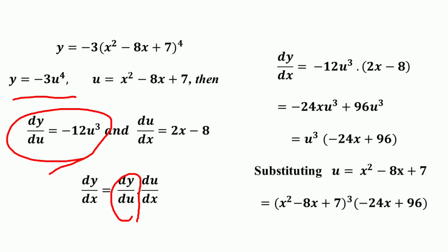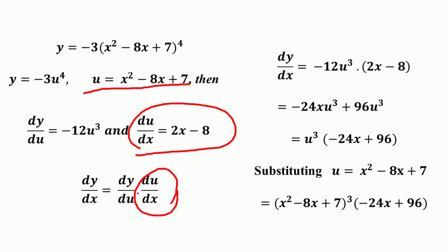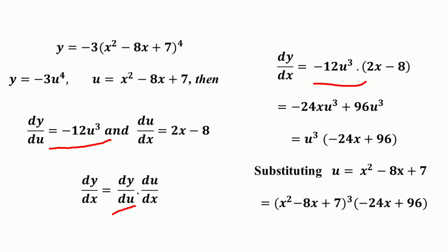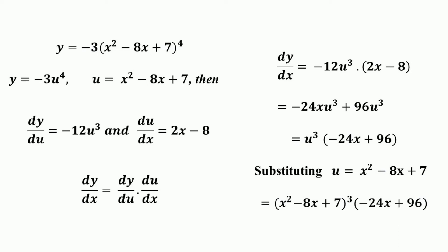So dy/du is equal to the derivative of -3u⁴, which equals -12u³. Then du/dx, the derivative of u with respect to x, equals 2x - 8. So dy/dx equals dy/du into du/dx, giving -12u³ into (2x - 8), which becomes -24xu³ + 96u³.